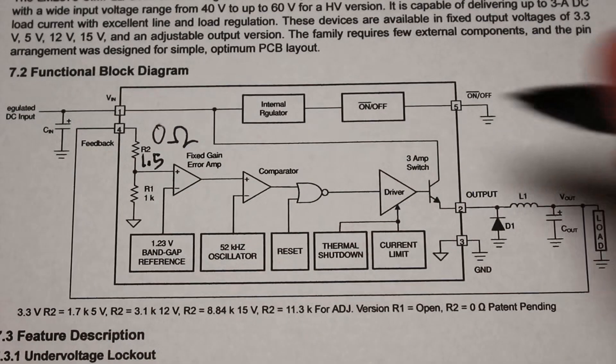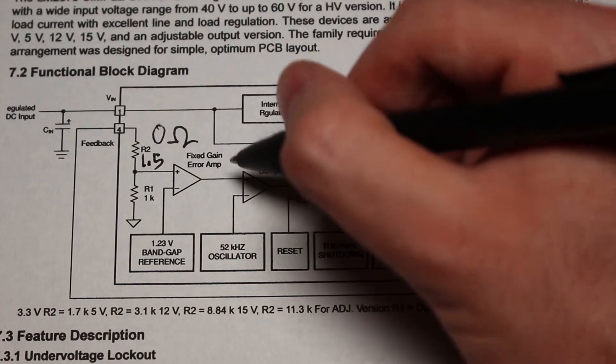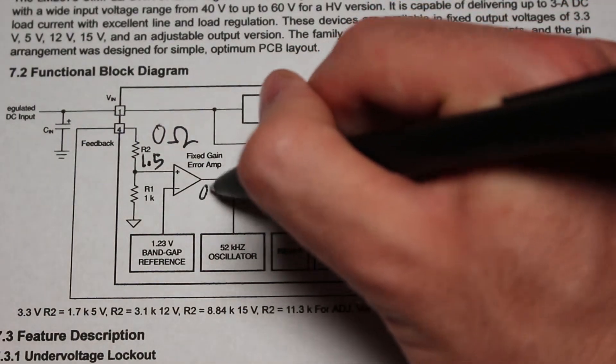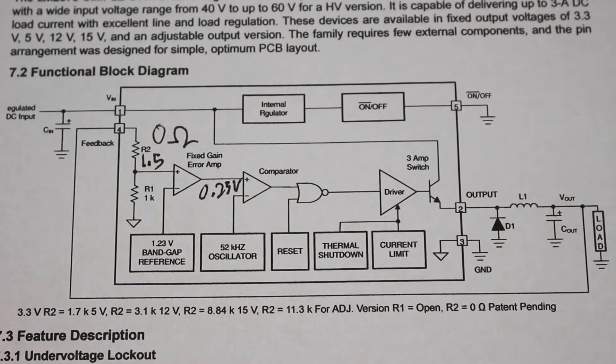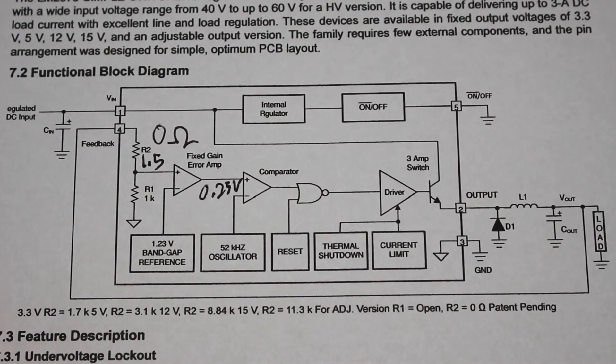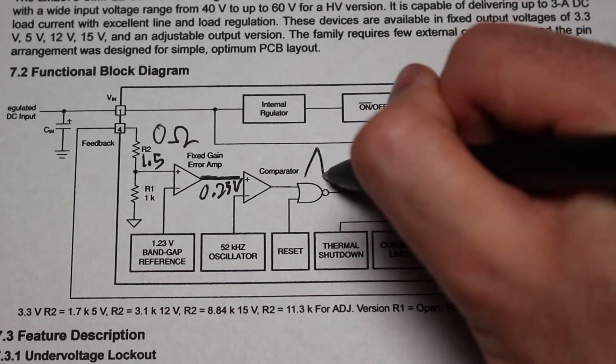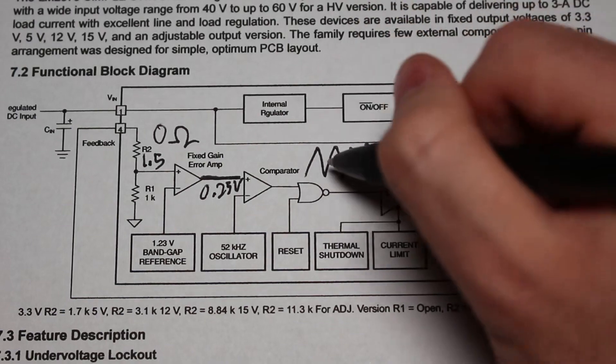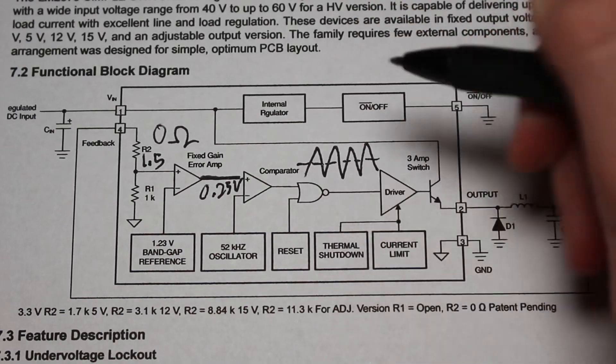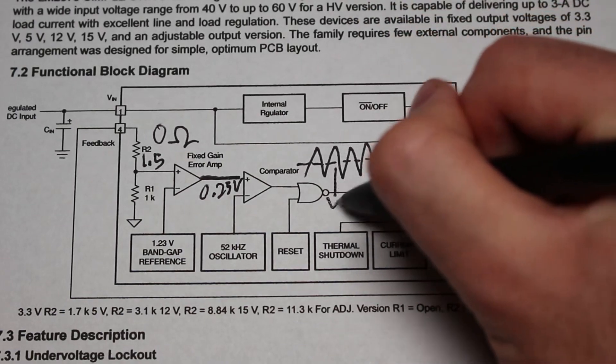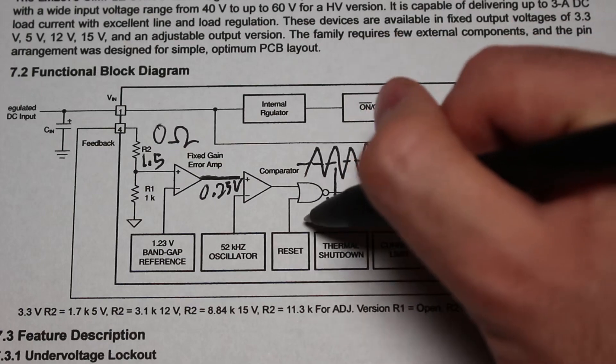Anyways, the voltage from the divider is then compared to a 1.23 volt reference in a differential op-amp configuration. We can call this output difference the error. The error is then put into a comparator along with a 52 kilohertz ramp oscillator. This is where the duty cycle is determined, since when the error is higher, the duty cycle is higher, and vice versa.